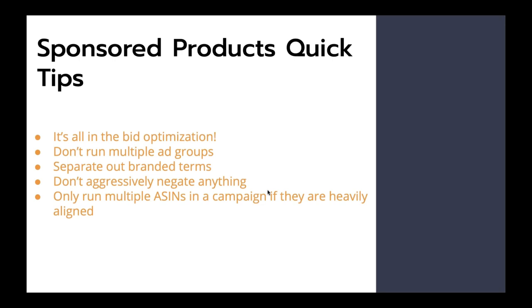Separate out branded terms. This is probably one of the biggest mistakes I see with large vendors and CPG clients — they have their branded terms mixed in with their categorical terms. When you look at their ACOS it's like 10% on a categorical campaign, but when you click the search term tab, you see they're only converting on their brand name. So they're not actually driving new-to-brand sales. Put your branded terms in their own campaign so they don't skew your data — of course if someone is searching for your brand name, they're probably going to convert and it will be a much lower ACOS.